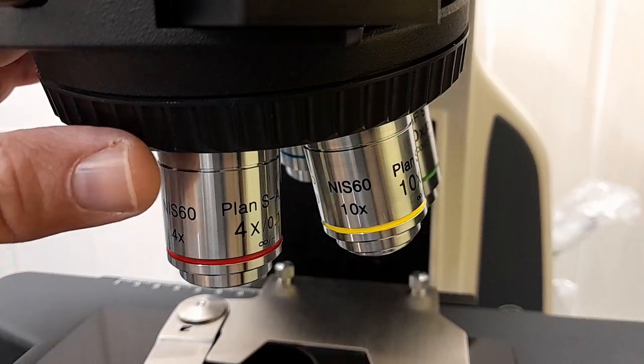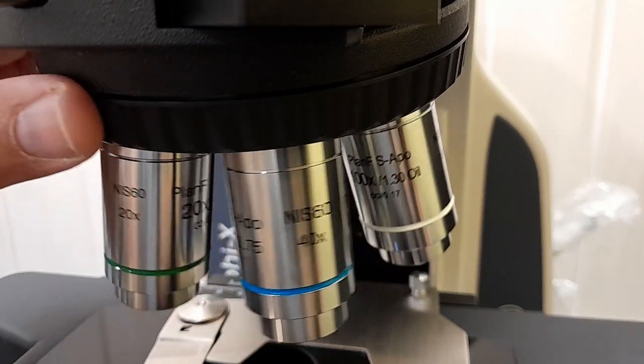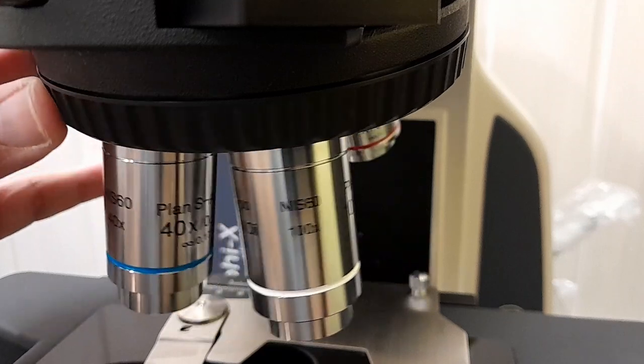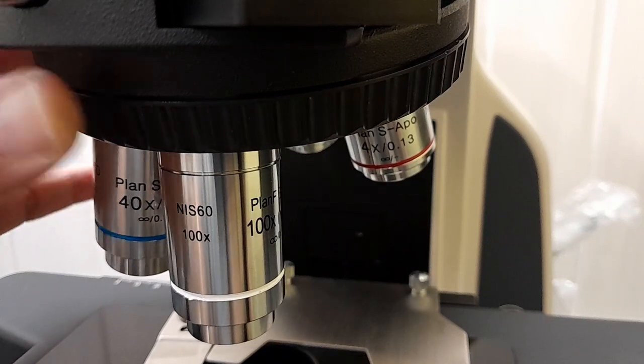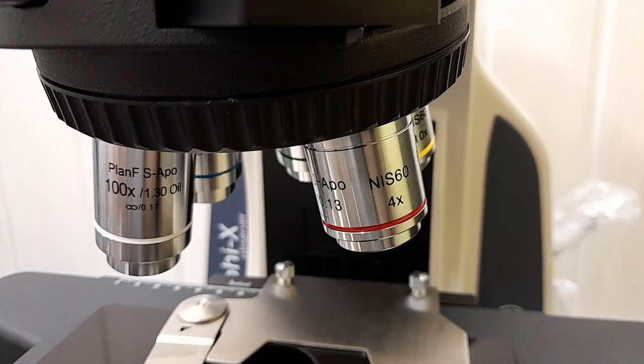You can install six objectives on the nose piece of the microscope. It comes pre-installed with a 4x, a 10x, a 20x, a 40x and a 100x oil immersion objective. And there is still one space left for an additional objective. I would of course always connect a 60x objective here. And then you're covered for all magnifications. In my case here, this microscope has apochromatic objectives, but the company also provides different objectives. For example, phase contrast if you want to.